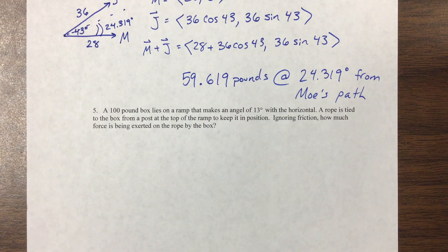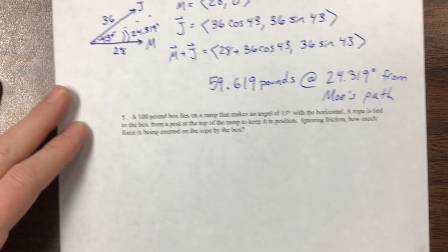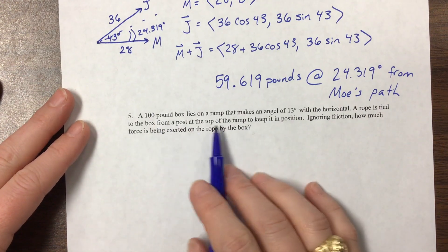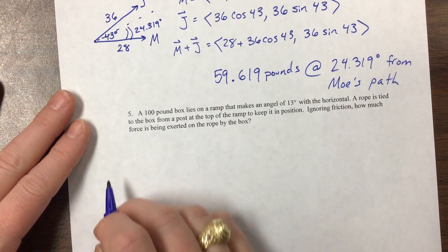This is our fourth and final video that I'm doing today on vector application, and it says a hundred pound box lies on a ramp that makes a 13 degree angle with the horizontal.